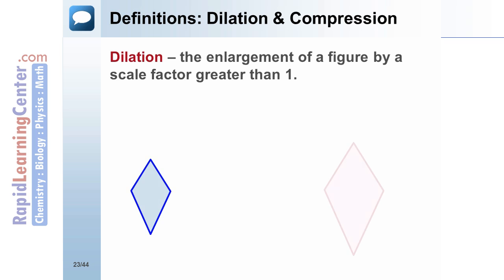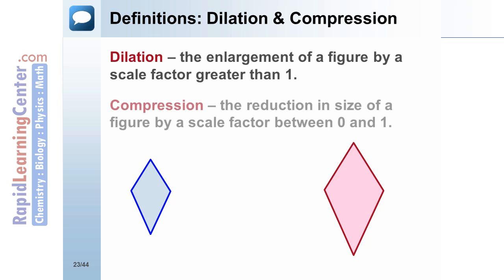Definitions: Dilation and Compression - A dilation is the enlargement of a figure by a scale factor greater than 1. A compression is the reduction in size of a figure by a scale factor between 0 and 1.